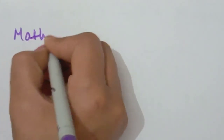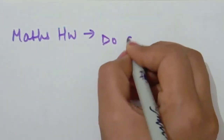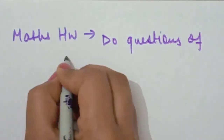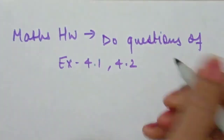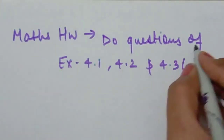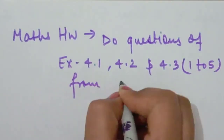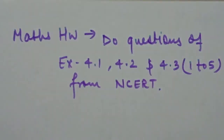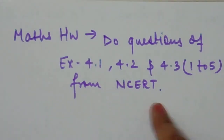Today's maths homework: revise chapter four — Linear Equations in Two Variables. We covered the introduction, what is a linear equation, solutions of linear equations, and drawing graphs. Your homework is to complete questions 1, 2, and 5 from exercises 4.1, 4.2, and 4.3 from NCERT. Thank you, have a nice day.